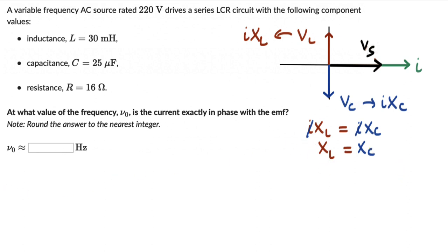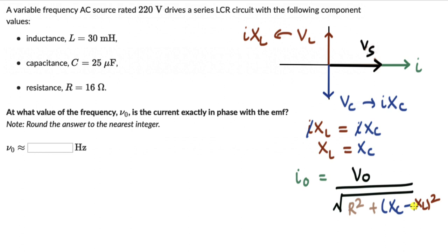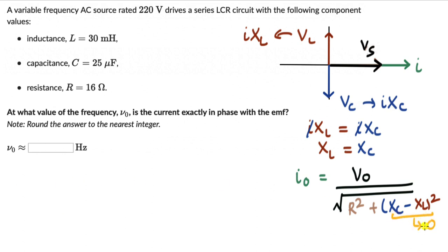Let's understand what happens to the peak current when XL equals XC. The peak current I₀ equals V₀ divided by the square root of R² plus (XC − XL)². When XC equals XL, this term becomes zero, and the total impedance reduces to just R. When the denominator is at its least, the peak current is at its maximum — so when XC equals XL, we get the maximum current.